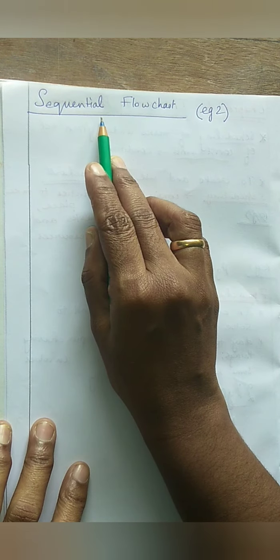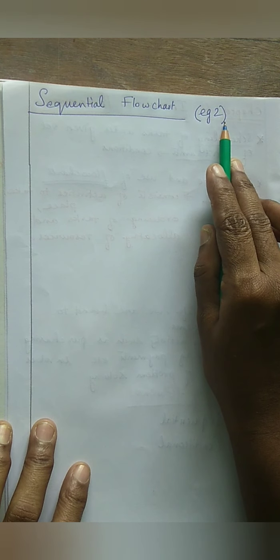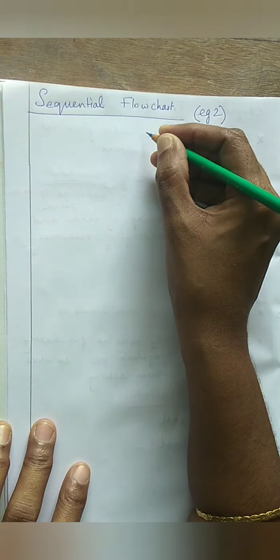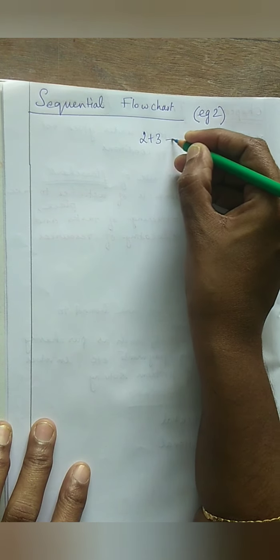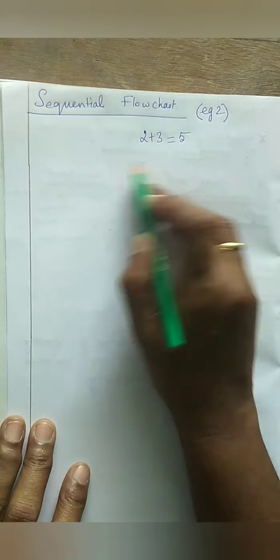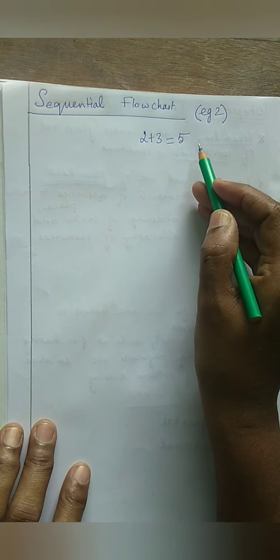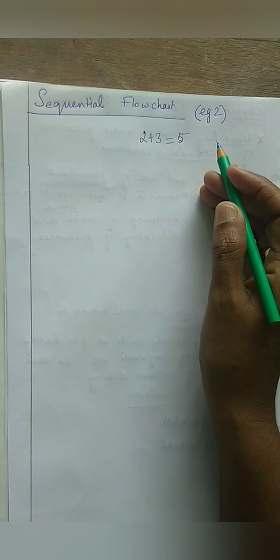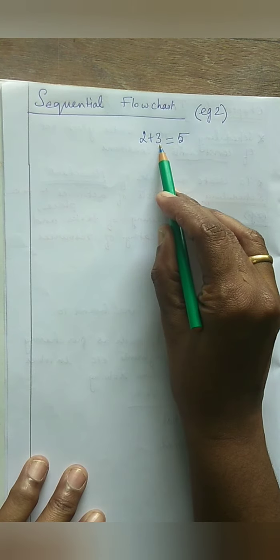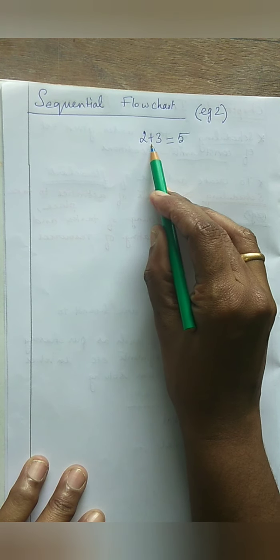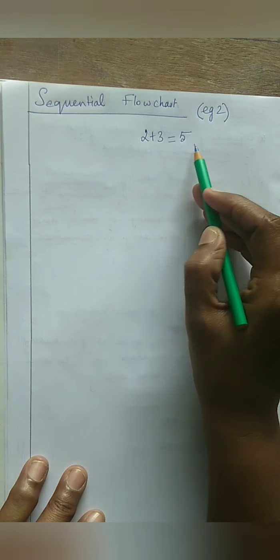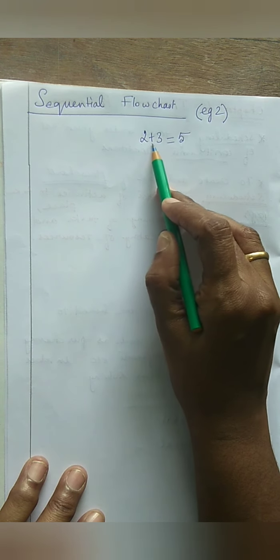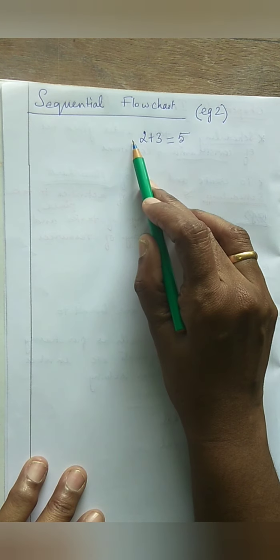We will continue with sequential flowchart example 2. Suppose I want to add 2 numbers: 2 plus 3. I must get the result as 5. I am going to represent this task using a sequential flowchart. The numbers 2 and 3 are the input, 5 is the output. The equal sign and addition sign come under the processing statement.